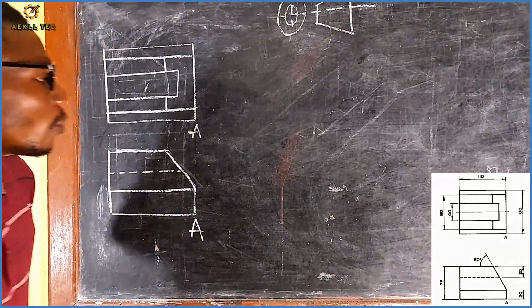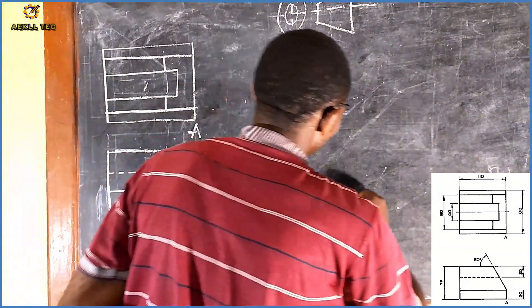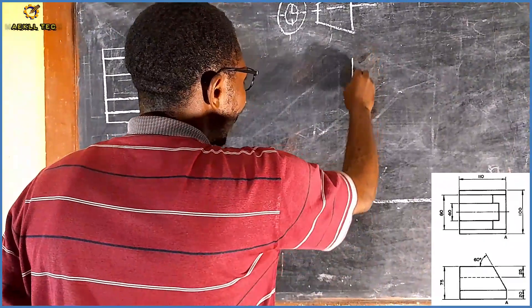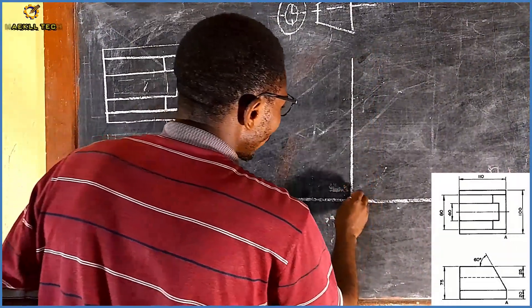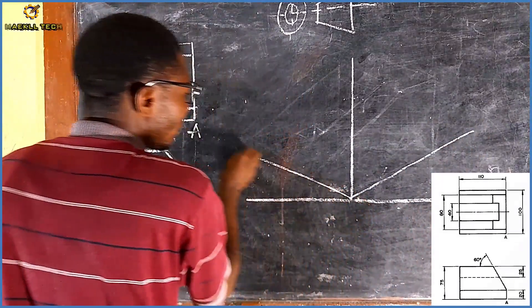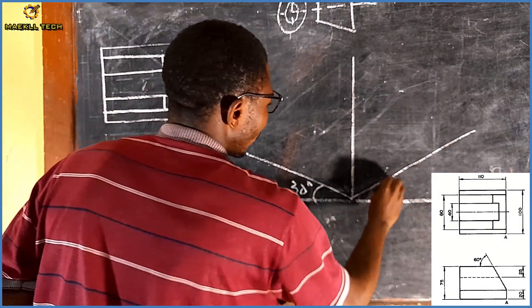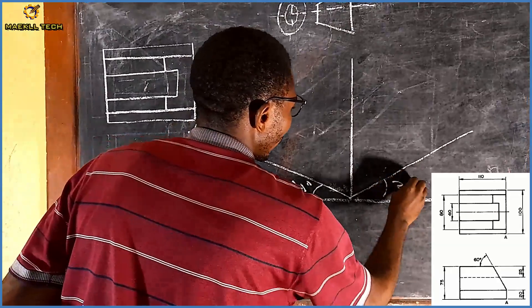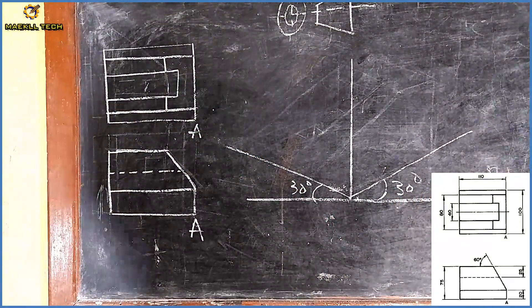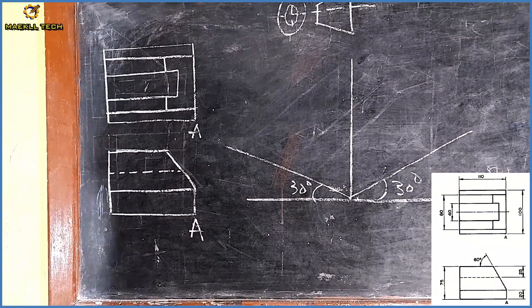The very first thing you need to do is to produce a horizontal line. Then I produce the isometric plane which is at 30 degrees to the horizontal — 30 degrees to the horizontal. After doing that, we are told that this area should be our bottom part.